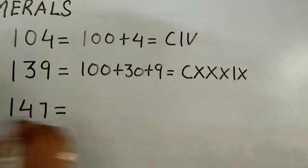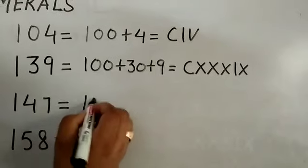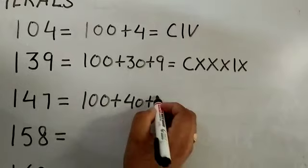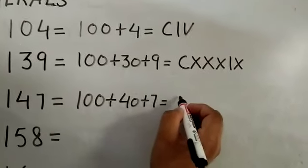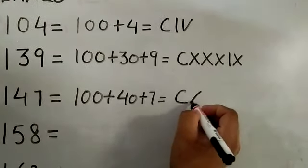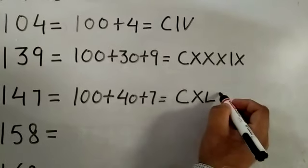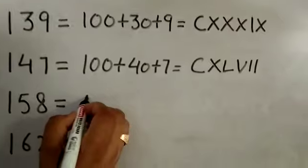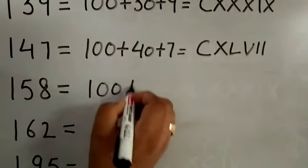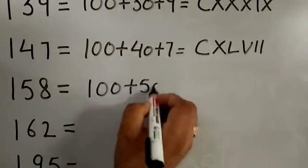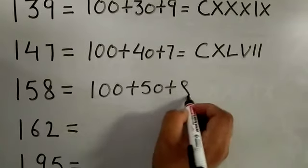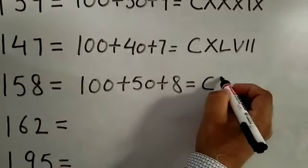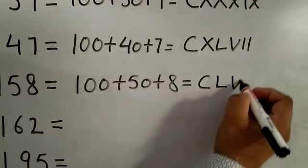147. Expand your number first: 100 plus 40 plus 7. C, 40 is XL, 7 is VII. 158: 100 plus 50 plus 8. CLVIII.